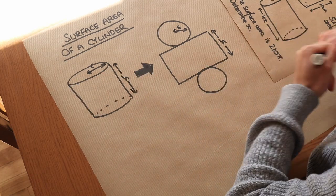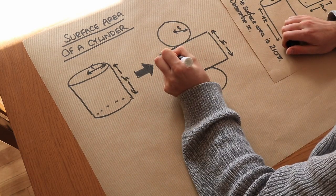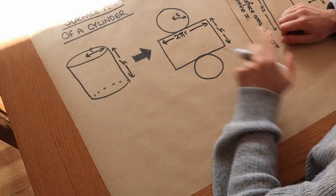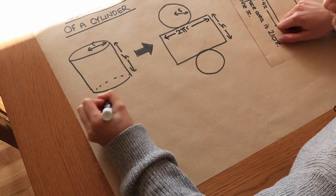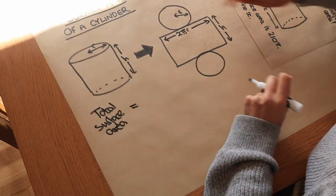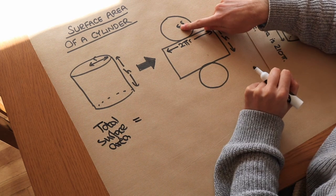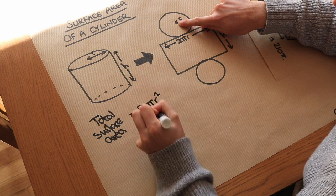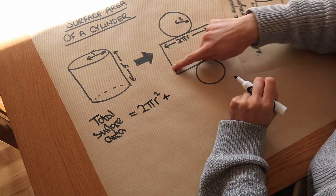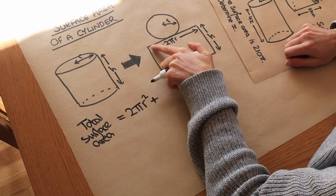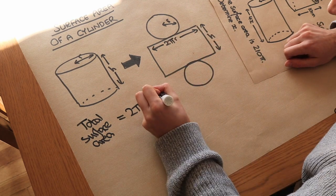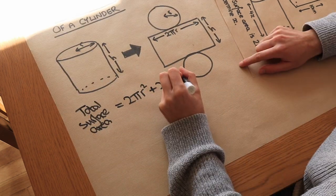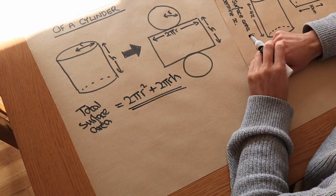The circumference of a circle is 2πr, so this length of the rectangle would be 2πr. Now we can find the total surface area: it's going to be two circles, each with area πr², giving two lots of πr², plus the area of the rectangle, which is length times height: 2πr times h. That is the total surface area of a cylinder.